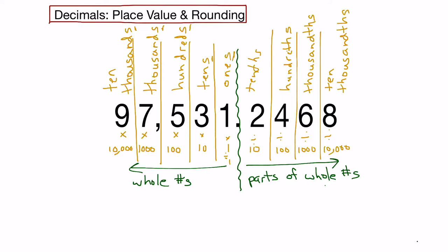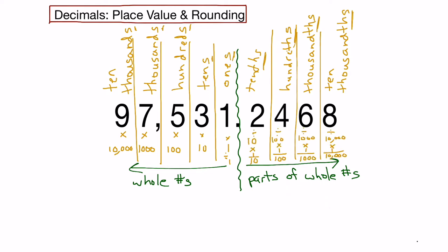Notice that for the decimal digits, the place values have the THS ending — tenths, hundredths, thousandths, ten-thousandths, etc. Another way to say divided by 10 is to multiply by 1 over 10; divided by 100 is the same as multiplying by 1 over 100; divided by 1,000 is 1 over 1,000, and so on. To sum up, the parts to the left are the whole number parts bigger than one, and the parts on the right are less than one. Numbers to the left and right also have matching pairs: tens and tenths, hundreds and hundredths, thousands and thousandths, etc.